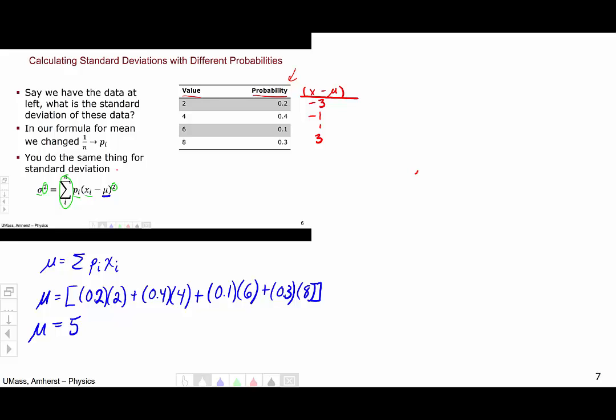In our definition of standard deviation, we care about this value squared. So let's continue and add yet another column squaring 9, 1, 1, and 9, getting rid of the negative signs as intended.